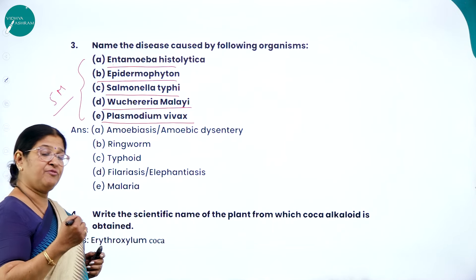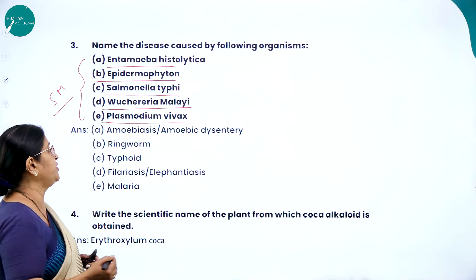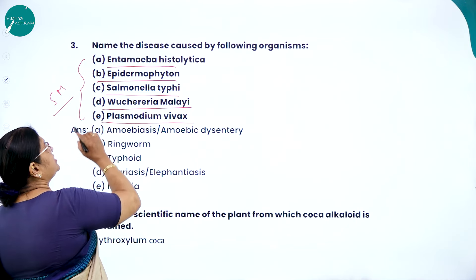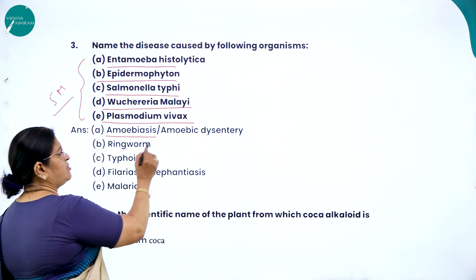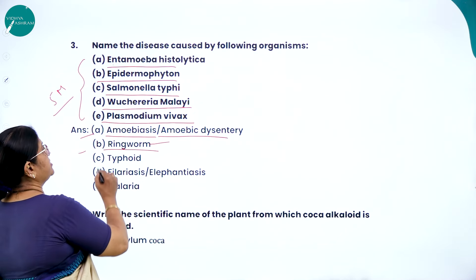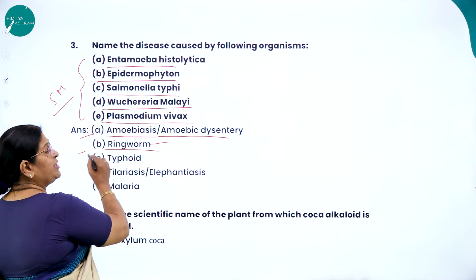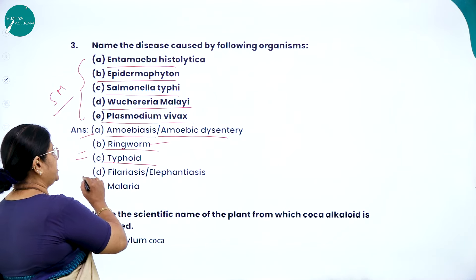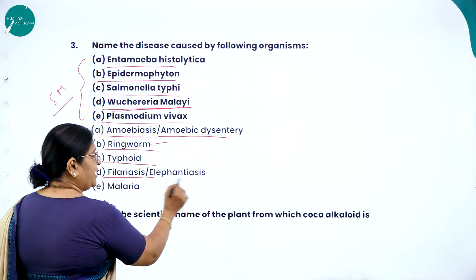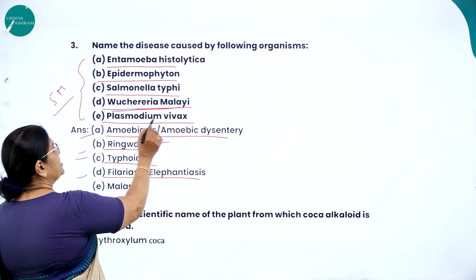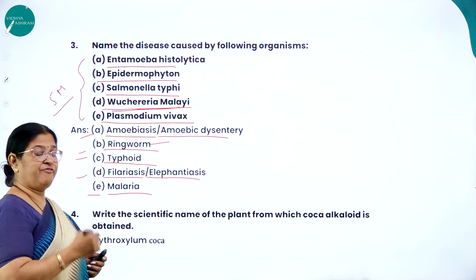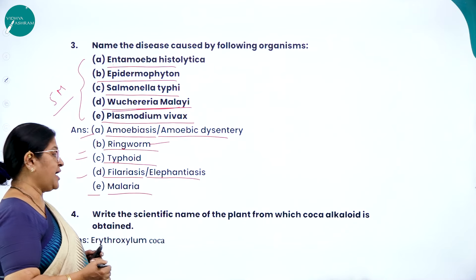The answers: Entamoeba histolytica causes amoebiasis or amoebic dysentery; Epidermophyton causes ringworm disease; Salmonella typhi causes typhoid; Wuchereria bancrofti causes filariasis or elephantiasis; Plasmodium vivax causes malaria. This is how five-marker split questions are answered.